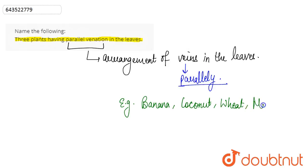These are several examples where we can see parallel venation. If we consider parallel venation, it looks like this: if this is the midrib, the veins basically run parallelly